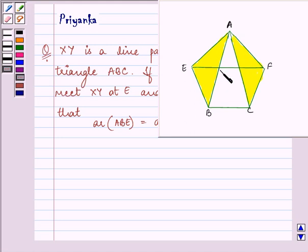Now these are the two points which are given to us as XY. In the question we are given that XY is a line which is parallel to BC. Since XY is a line parallel to BC, that means EF will also be parallel to BC.